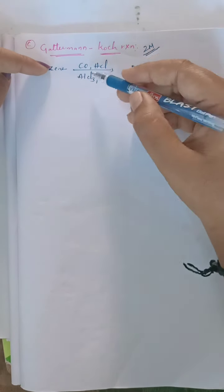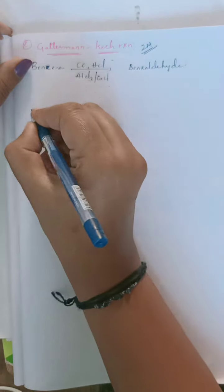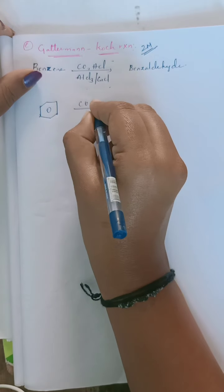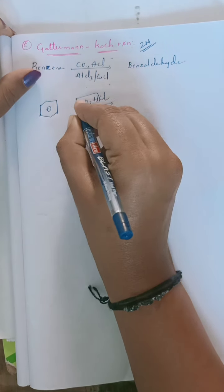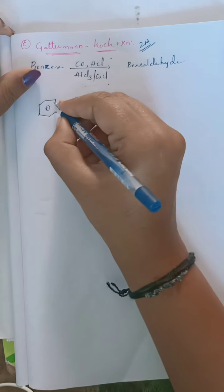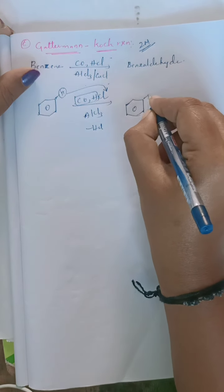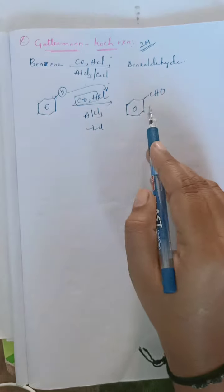The last and most important preparation of aldehyde is the Gattermann-Koch reaction — very important for one or two mark questions. In this reaction, benzene undergoes reaction with carbon monoxide and HCl in the presence of anhydrous AlCl₃ (or copper chloride). Carbon monoxide and hydrogen react together, a CHO group is added to the benzene ring, and a hydrogen is eliminated to react with Cl giving HCl. Finally benzaldehyde is obtained.